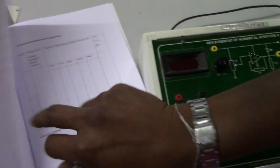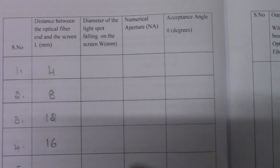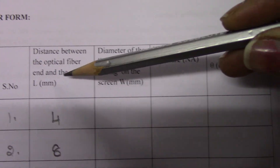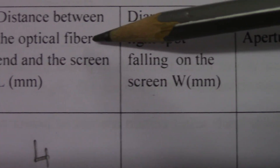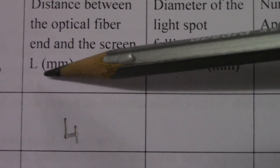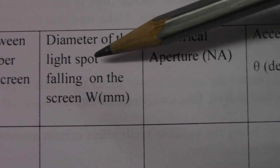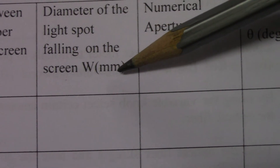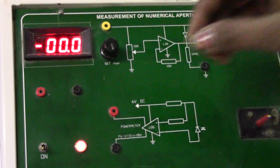Now I will show you the tabular column. After connecting, the readings you need to take from the experiment are: the distance between the optical fiber end and the screen, denoted by capital L, and the diameter of the light spot falling on the screen, denoted by W.